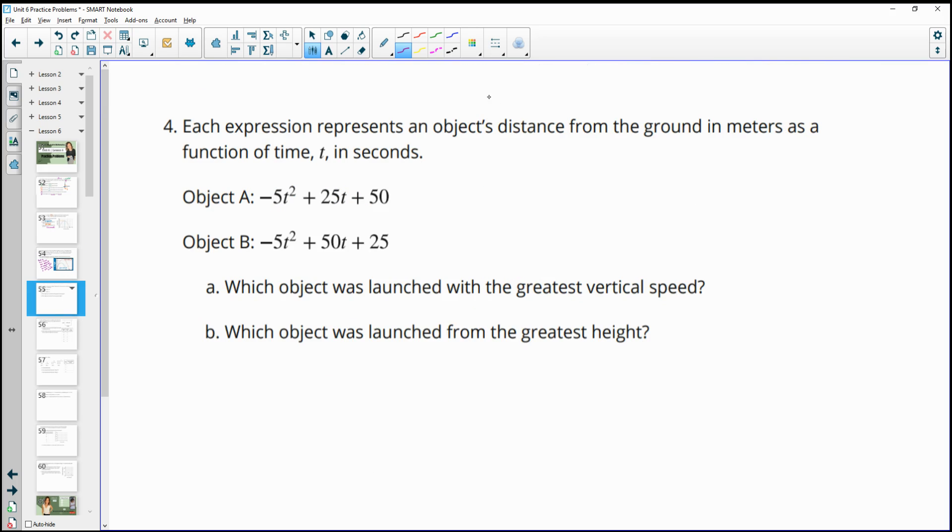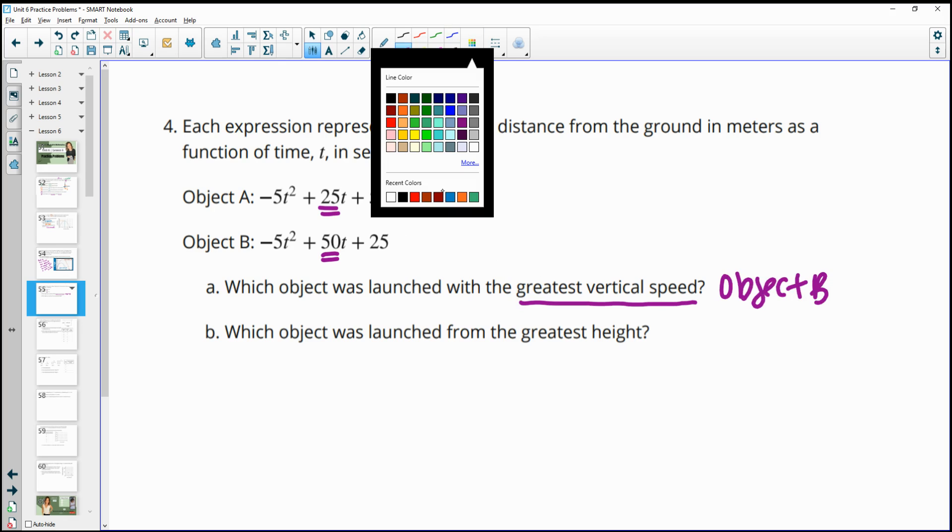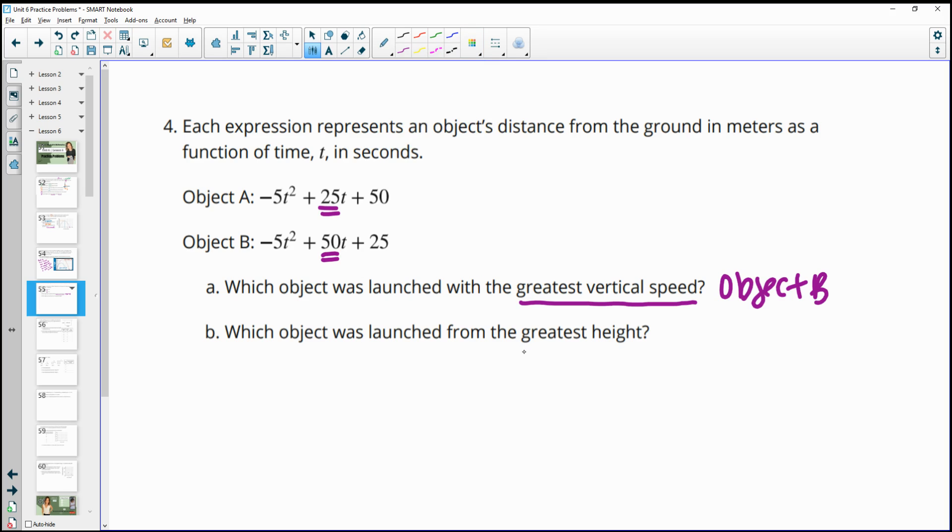Number four, each expression represents an object's distance from the ground in meters as a function of time. Which object was launched at the greatest vertical speed? So the vertical speed comes in front of the T value. And so this one would be object B. Because it's at 50. Then the next one says, which object was launched from the greatest height? So your height, your initial height, is this constant number at the end. And so that would be object A at 50 feet above the ground. Are they measuring in feet? Oh, 50 meters above the ground.